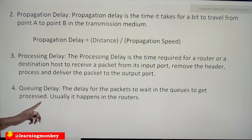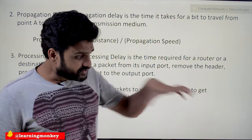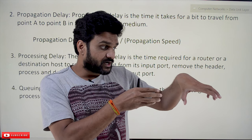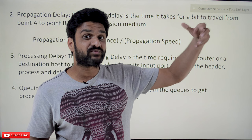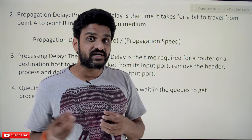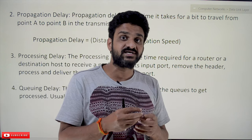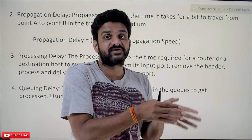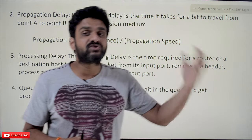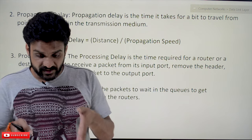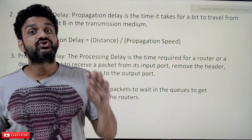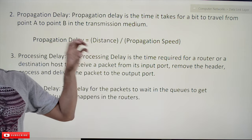The next one is queuing delay. The name itself states it is the delay of packets waiting in queues to get processed. In routers, after receiving data at the input port, if more data packets are running on the router, the packets have to be processed in a specific order using a queue data structure. The amount of time a packet spends within that queue is what we call queuing delay.